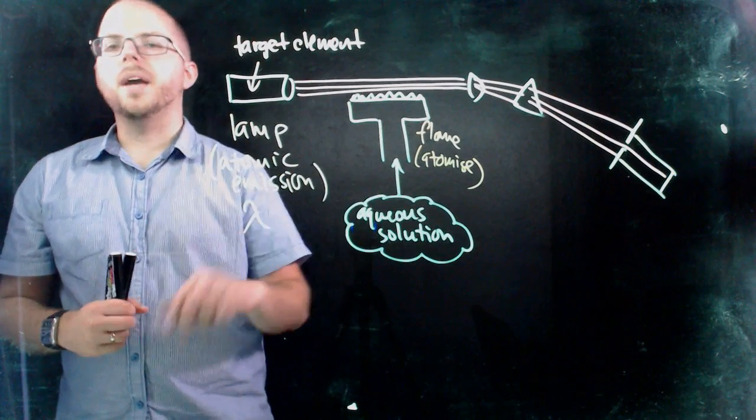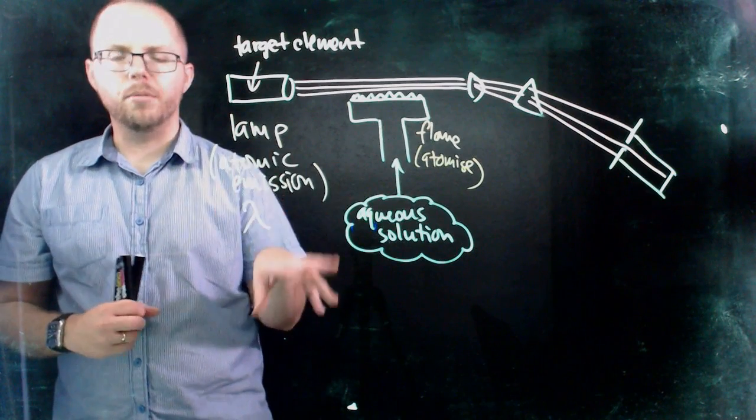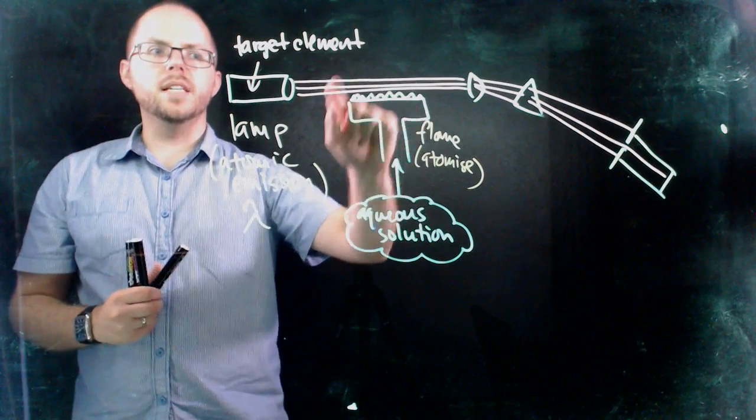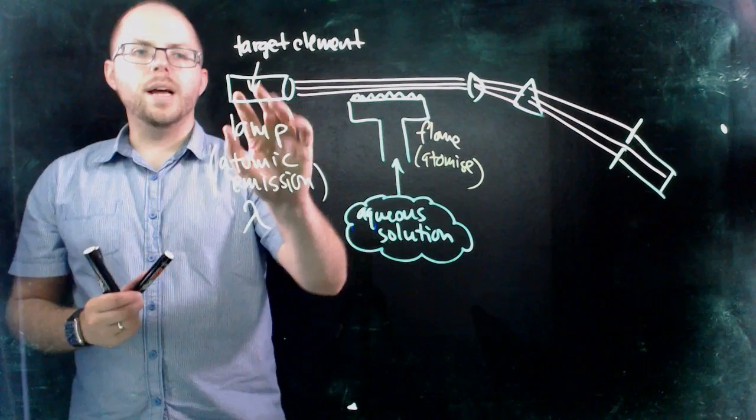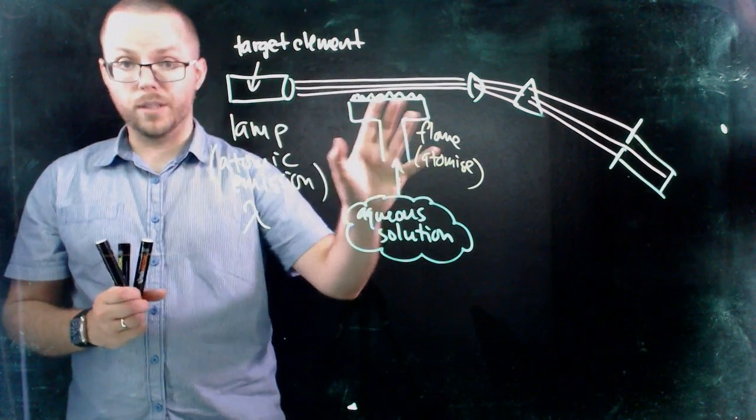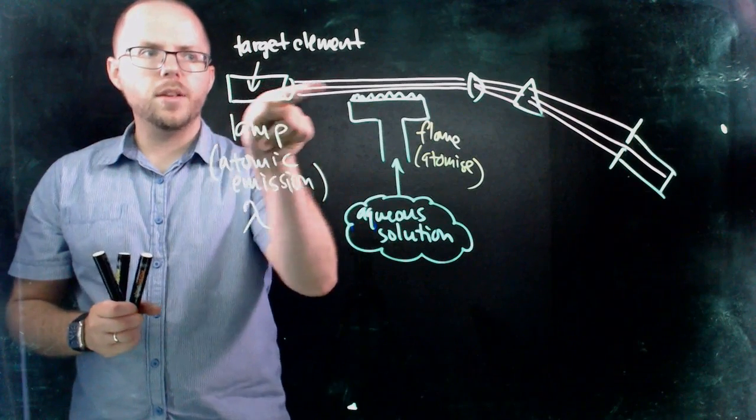And so then, you know, mercury atoms are separate from lead atoms, are separate from cadmium atoms, and so on. So that they're in the flame, the idea is that then they're present in this area here. We've got our lamp that's producing those particular wavelengths we know our mercury, for example, will absorb, and it's shining through the flame.